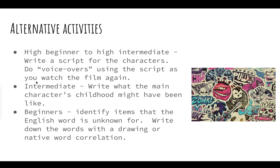Another activity you could do with your intermediate tutee is to write what the main character's childhood might have been like. I'll show you a bit of the film and it will make more sense, because we see pictures at the beginning of the main character growing up. So you could use those pictures to create a story about his imagined childhood, and you could talk about it in the past tense if that's a tense you've been working on.